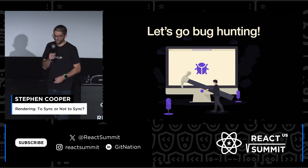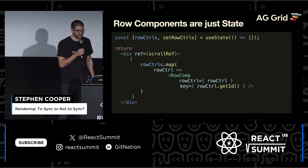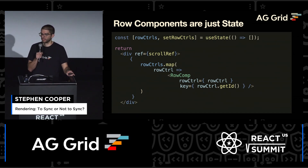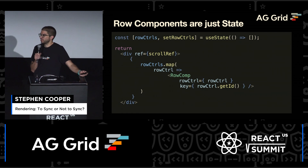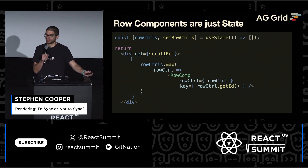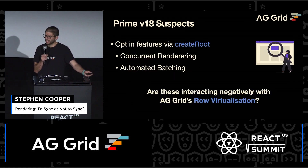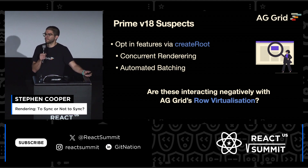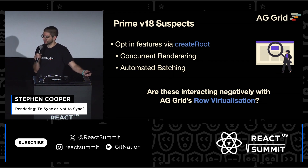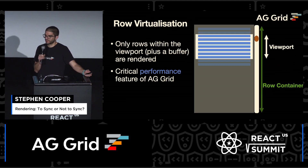So that's what we're going to do — we're going to go bug hunting. The first thing to do is look at the code which is causing the updates for the rows. There's nothing exciting here, it's just state. When the rows change, you scroll and need to look at new rows, we update which rows are displayed. But I think there are some prime suspects for this issue in version 18: concurrent rendering and also automated batching. What we're going to see is if these two features are interacting negatively with AG Grid's row virtualization. So, what is row virtualization?